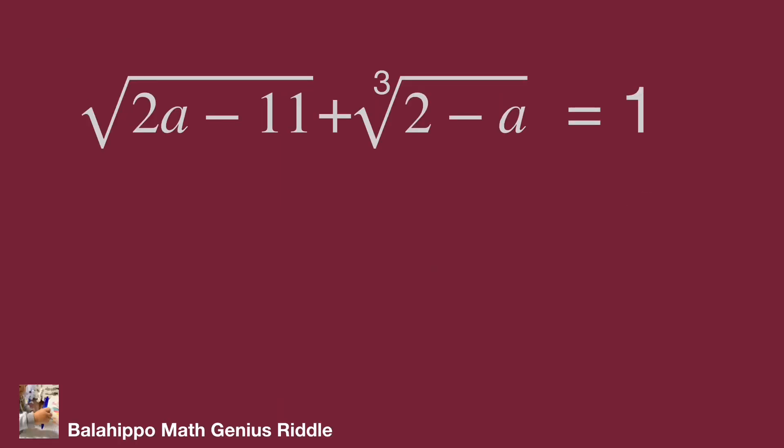The question: square root of 2a minus 11 plus cube root of 2 minus a equals 1. It's a challenge. There are square root and cube root items in the left side, but when we analyze this item 2a minus 11 and 2 minus a...